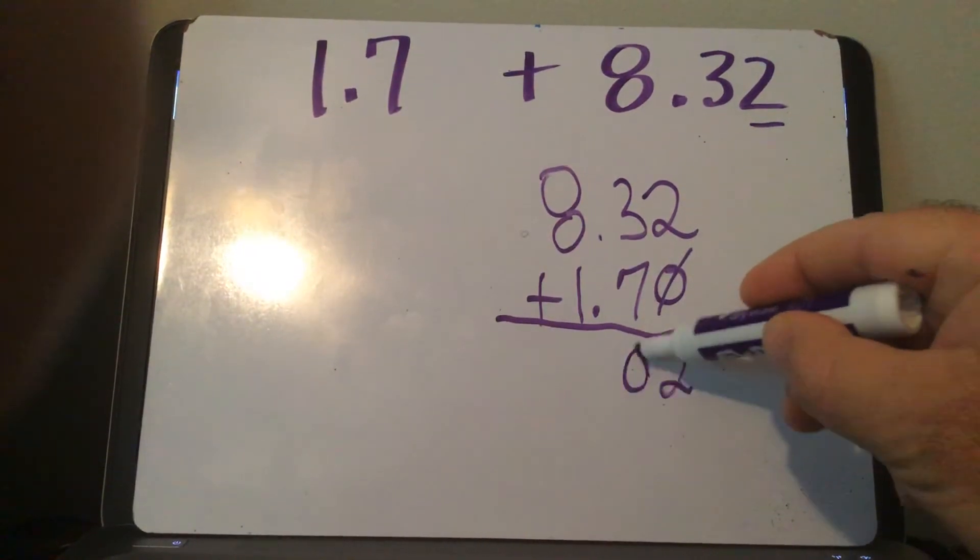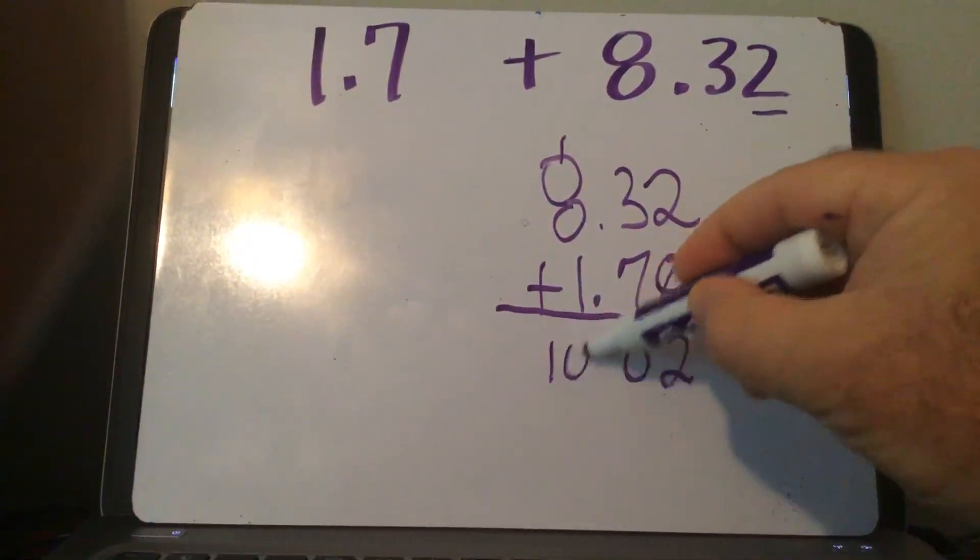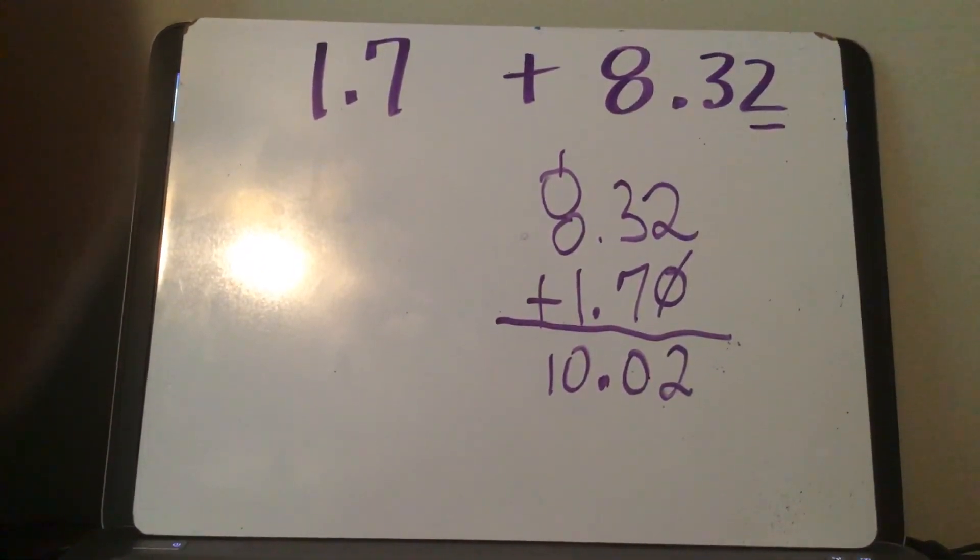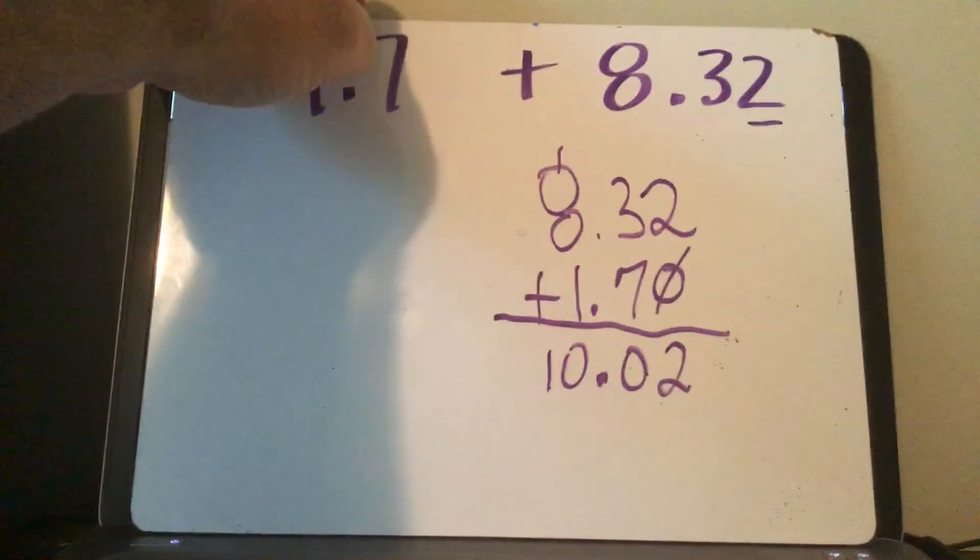3 plus 7 is 10, carry the 1. 8 plus 1 is 9, plus 1 more is 10. You get 10 and 2 hundredths. That one's pretty easy. Now I'm gonna throw you for a loop on this one, people. This one's gonna maybe be a little tougher than you think.